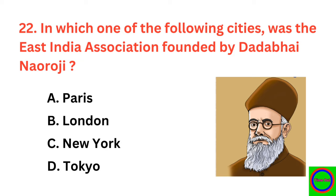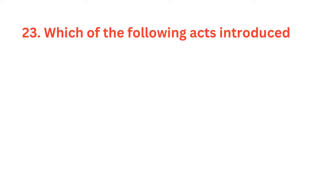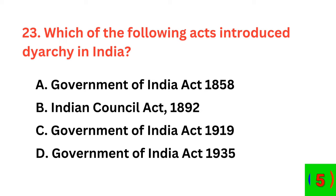Which of the following acts introduced Dyarchy in India? The correct answer is option C: Government of India Act 1919.